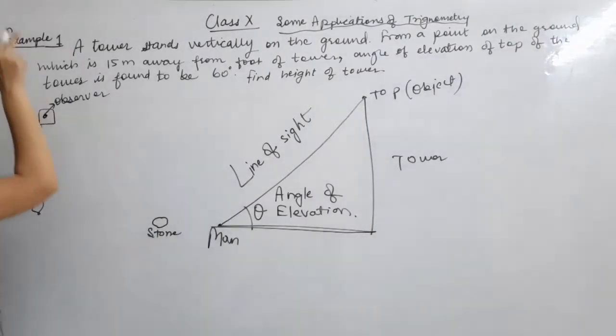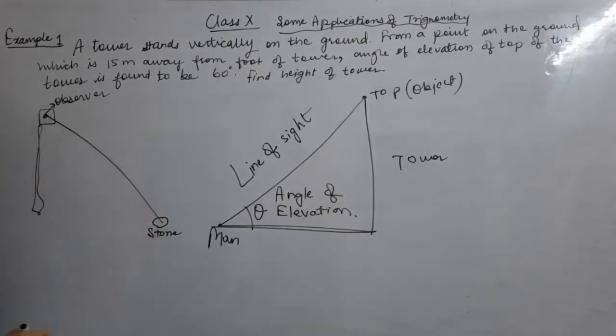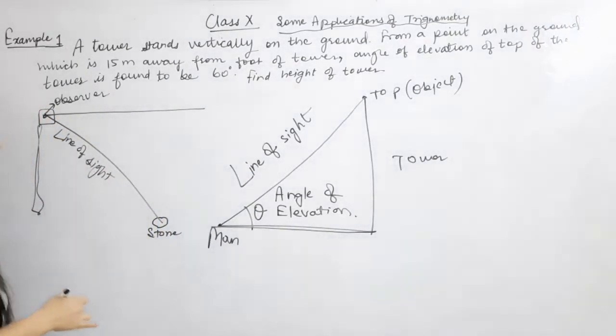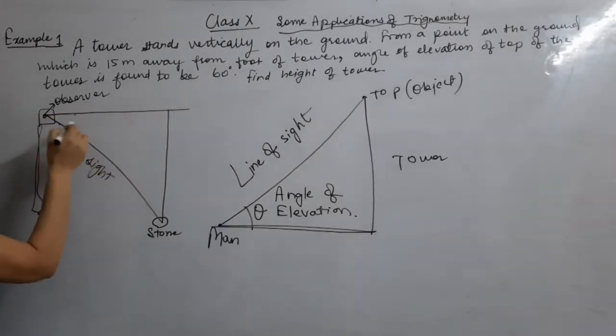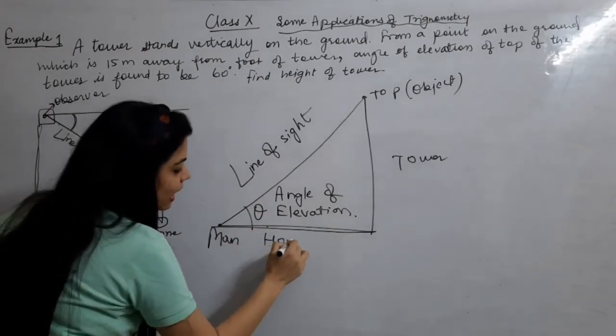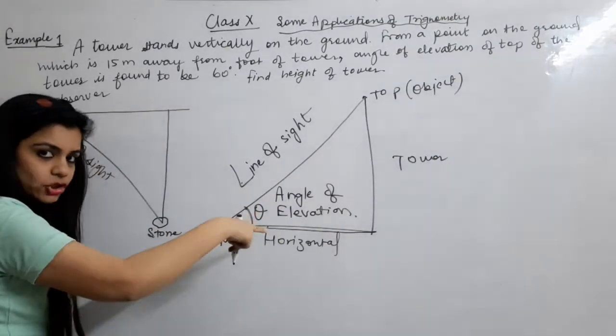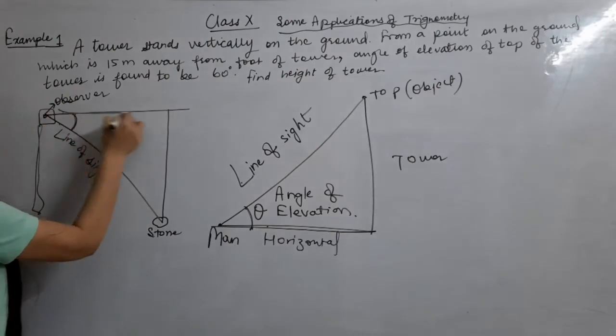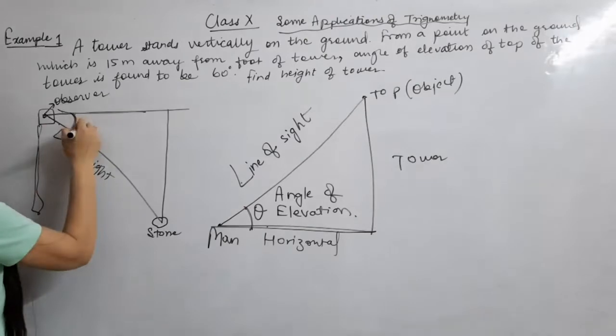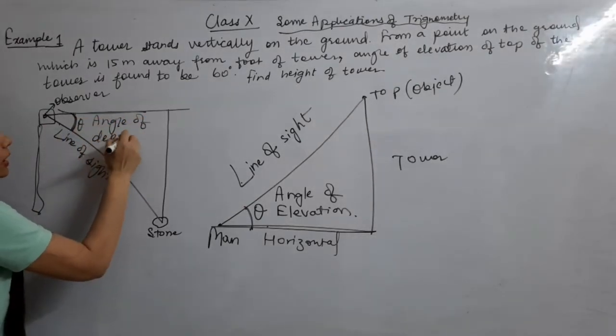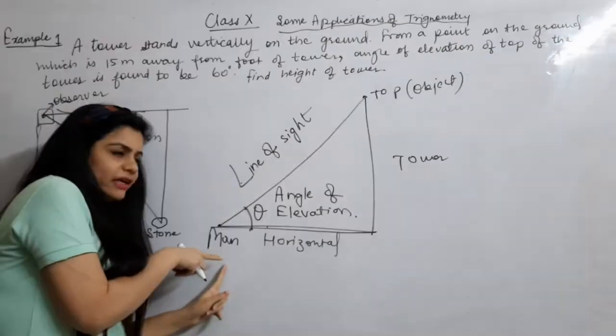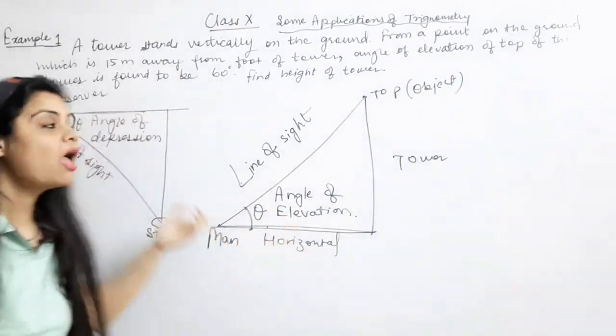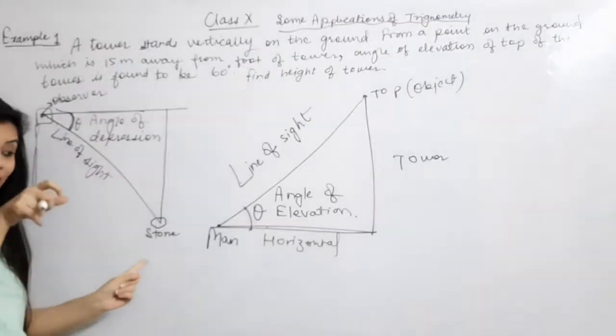The observer is sitting on the ground. So, again, if I join these two, this is called line of sight. Horizontal level is this. And if I join this and this, then with horizontal level, the angle of the line of sight, this angle is called angle of depression.